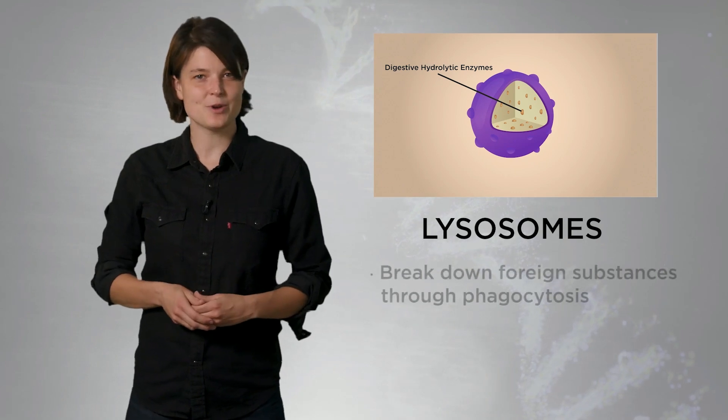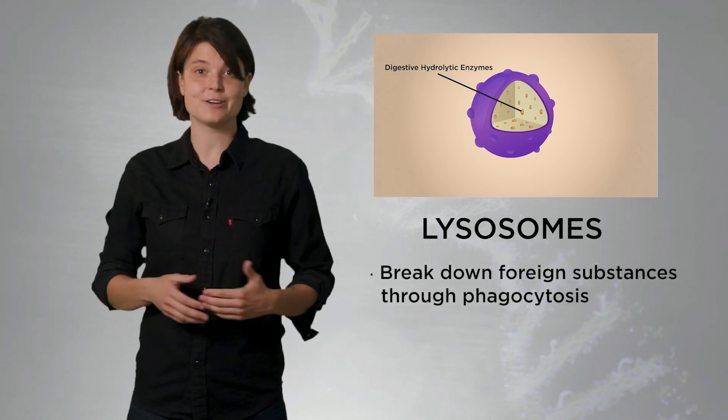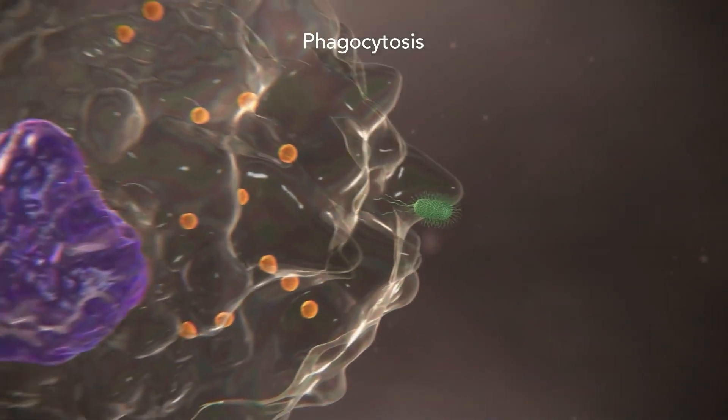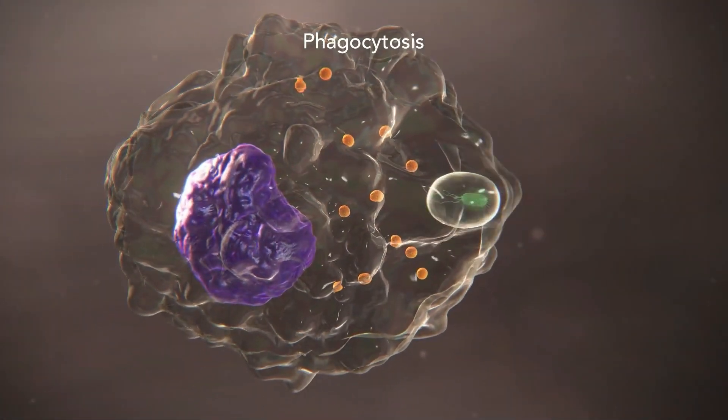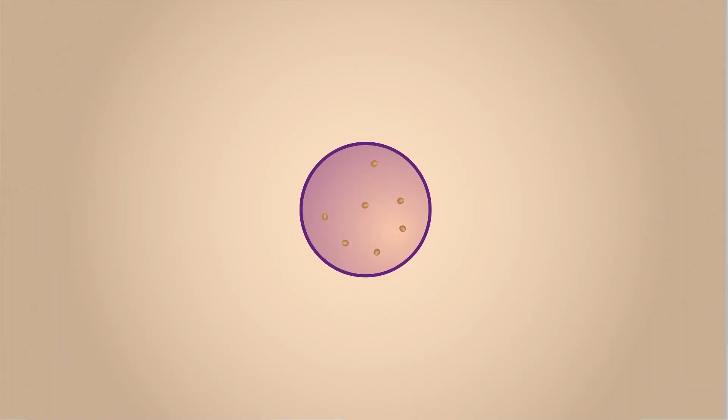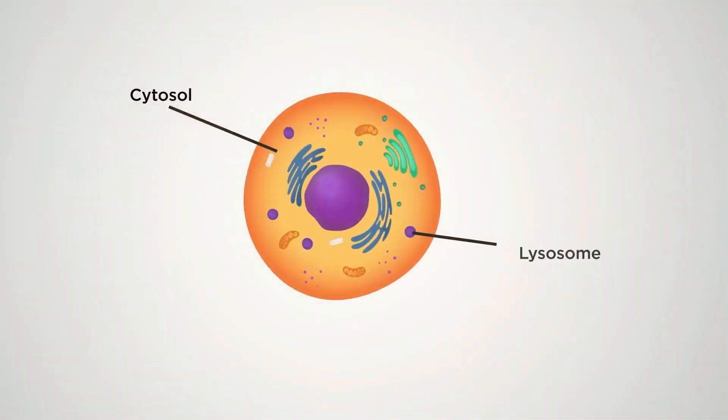Lysosomes also break down foreign substances in a process called phagocytosis, which is, of course, very useful for cells in our immune system, which can eat and destroy harmful bacteria or other pathogens. The inside of a lysosome is acidic compared to the relatively neutral pH of the cytosol. The enzymes in lysosomes operate well at this acidic pH. If a lysosome ruptures, the enzymes won't cause significant damage in the cytosol because they do not operate well at the neutral pH.